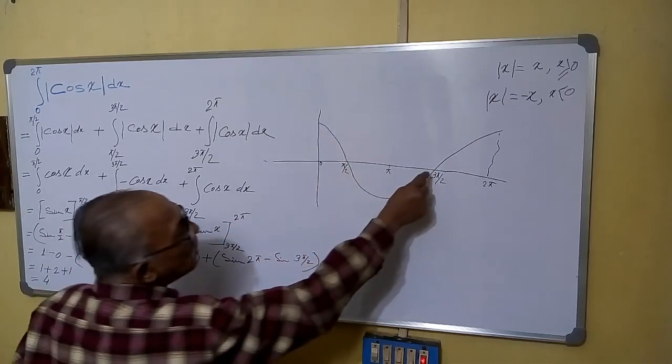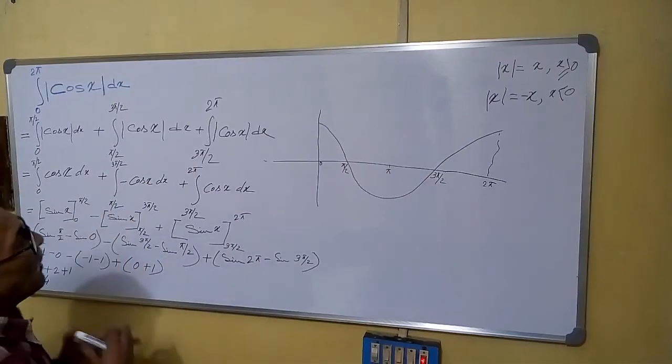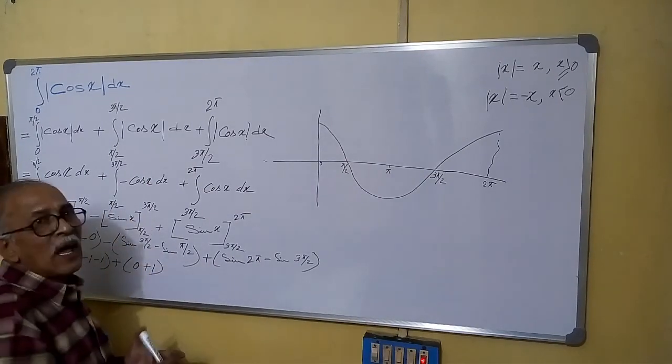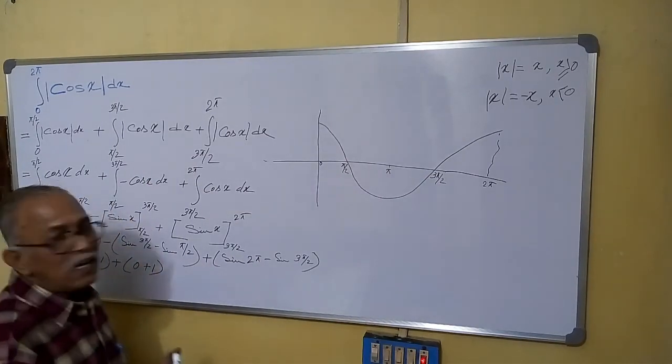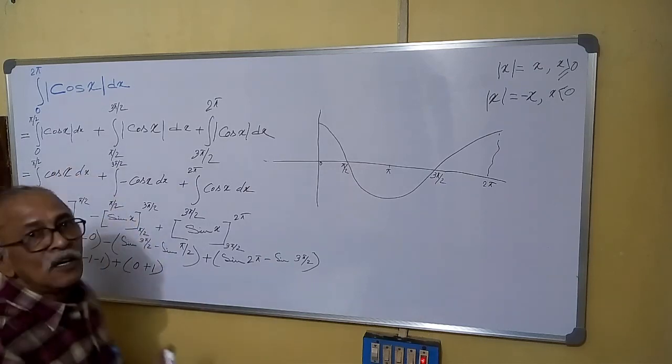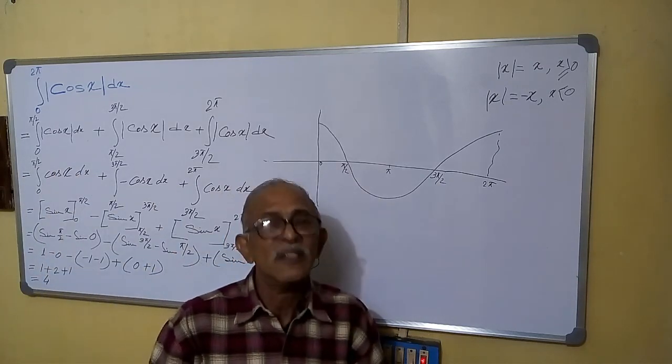At pi by 2 and 3 pi by 2, then break in intervals where it is positive and where it is negative. Then after removing modulus sign, do that integration. Thank you.